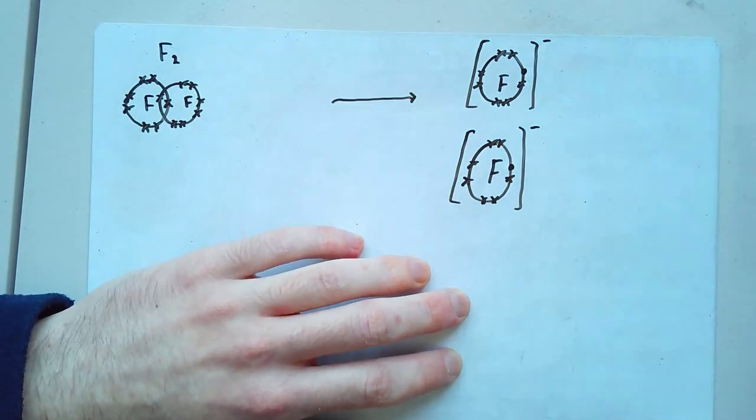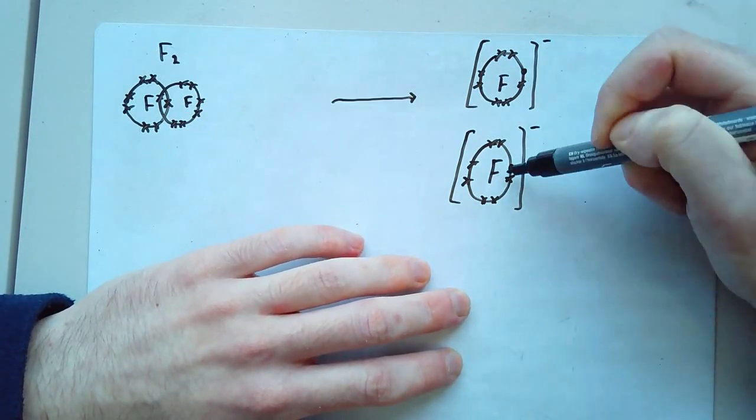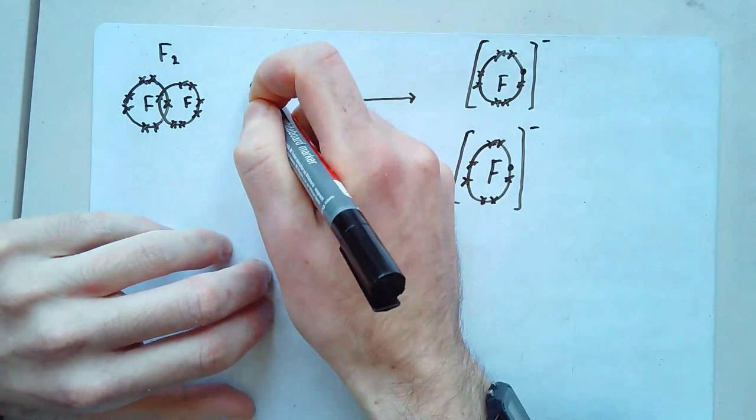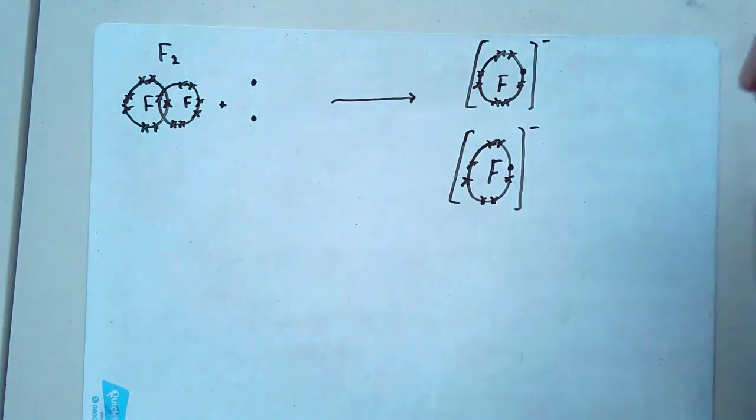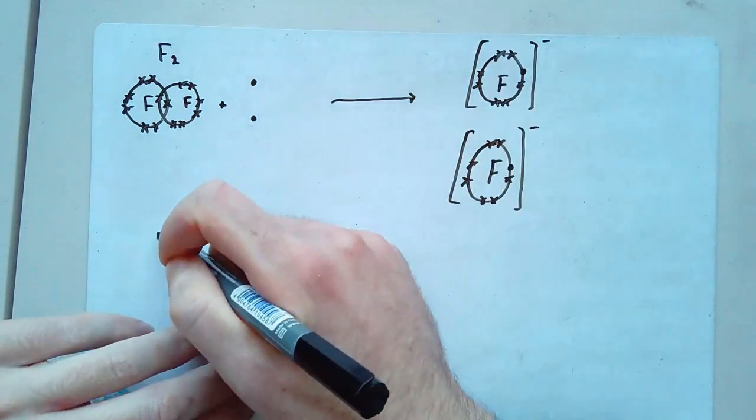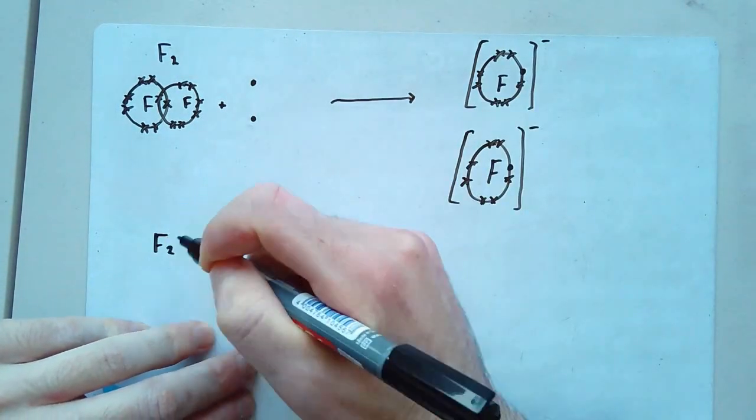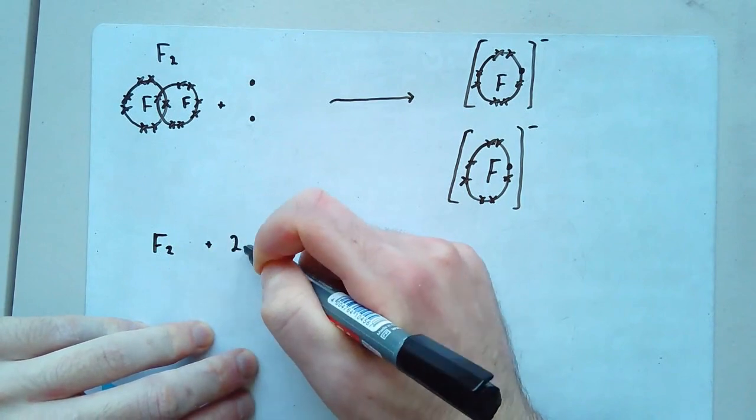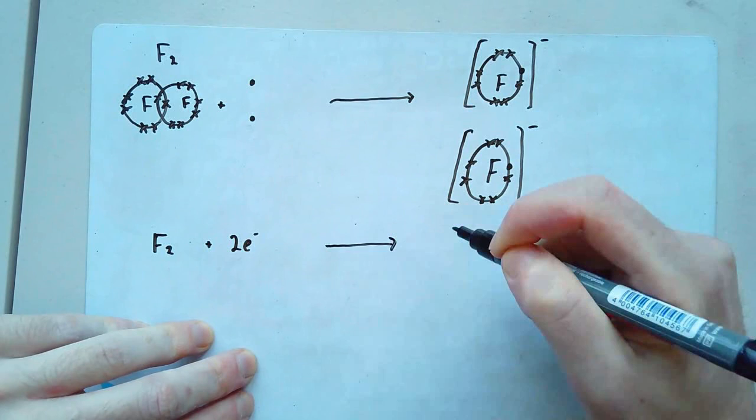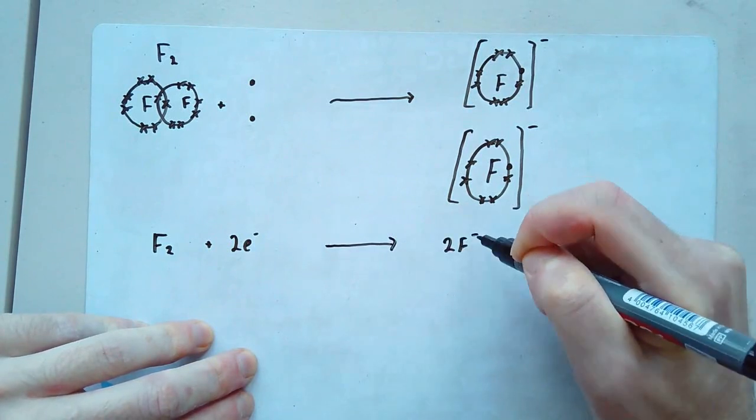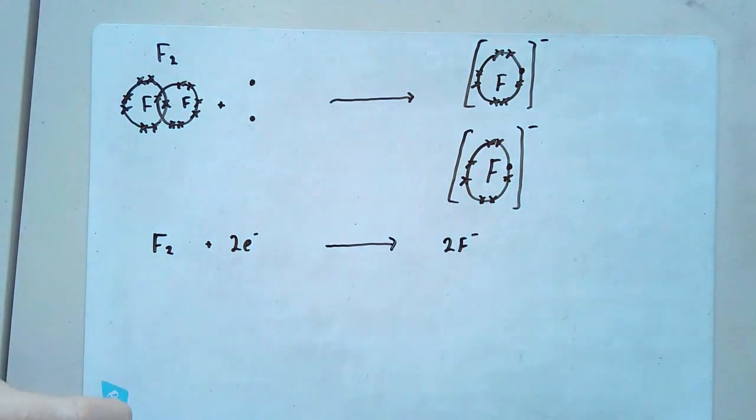Now, if the electrons came from somewhere else, I have to include them over here in the same way that I did last time. I've got to put those two into my picture somehow, which means I can then write the equation as F2 plus 2 E- forming 2 F-. And that there is how you do it for fluorine.